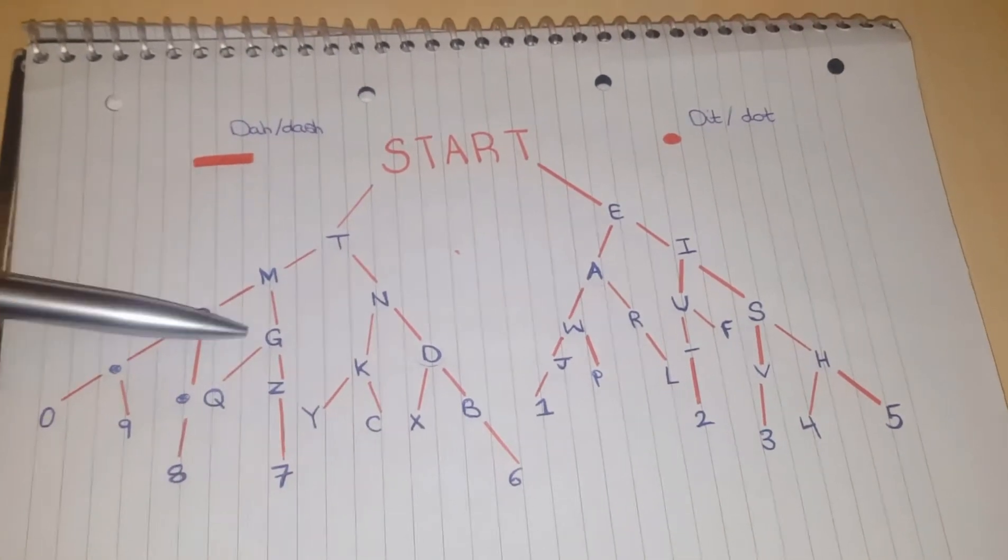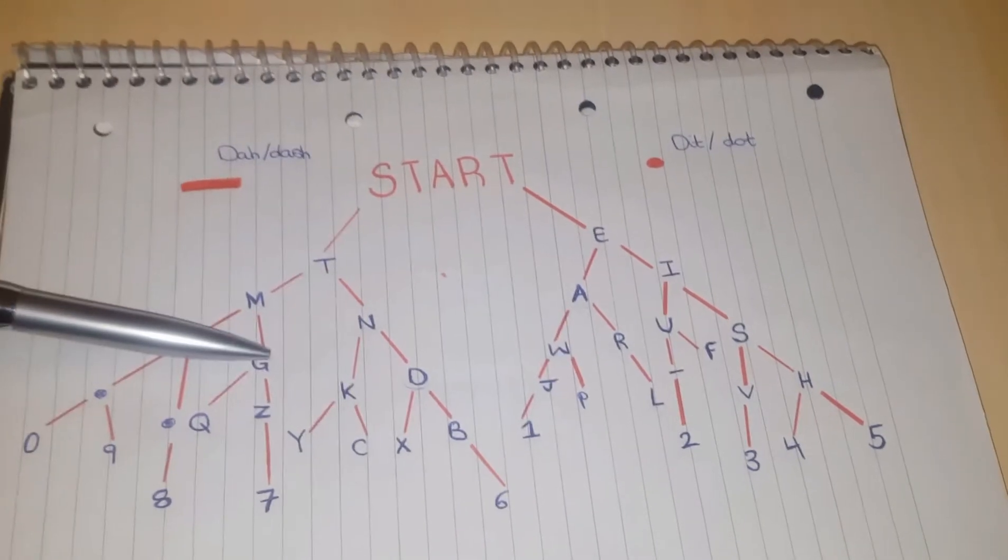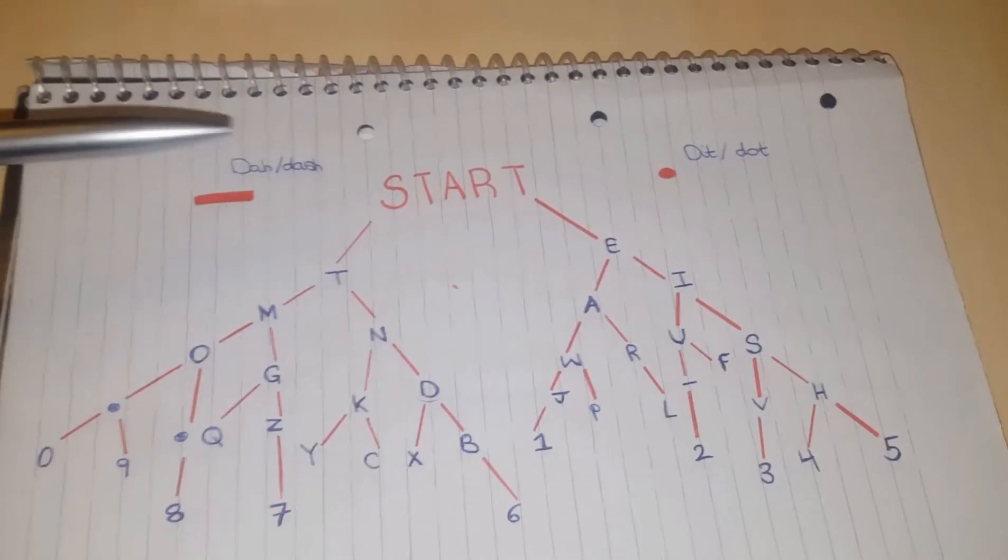So, to find G, you go down dash dash dot. So, G would be dash dash dot.